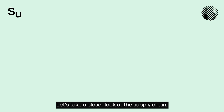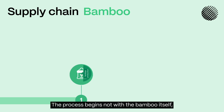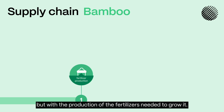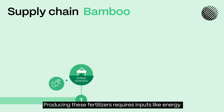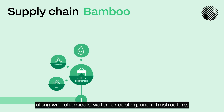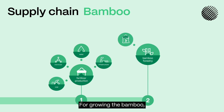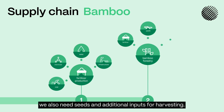Let's take a closer look at the supply chain, starting with the bamboo used to make the toothbrush. The process begins not with the bamboo itself, but with the production of the fertilizers needed to grow it. Producing these fertilizers requires inputs like energy, primarily from coal in China, along with chemicals, water for cooling, and infrastructure. For growing the bamboo, we also need seeds and additional inputs for harvesting.